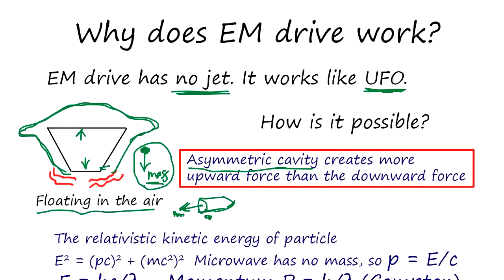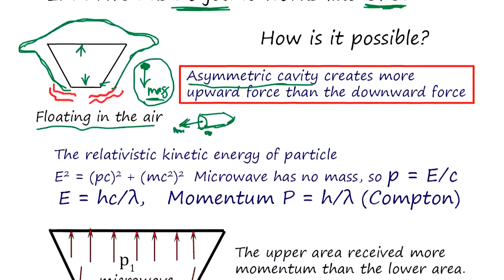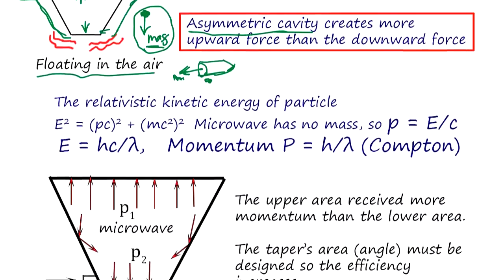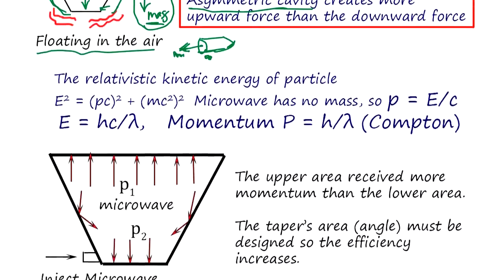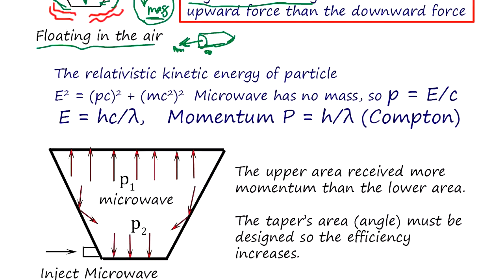I'll explain to you a little bit using the physics equation to see how it works. Relativistic kinetic energy of the particle is the sum of mc² and momentum times speed squared.